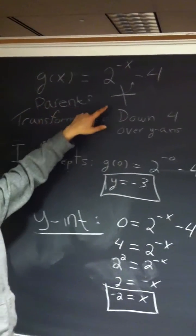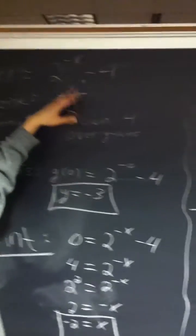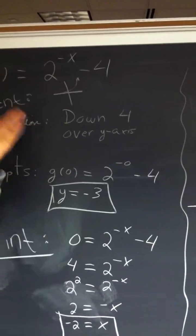My parent function will be this graph right here. And my transformation will be, it would go down 4 and it's going to be over the y-axis.